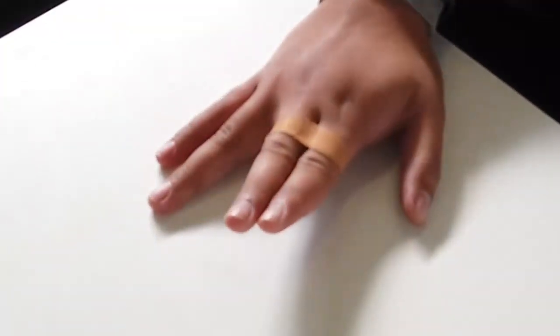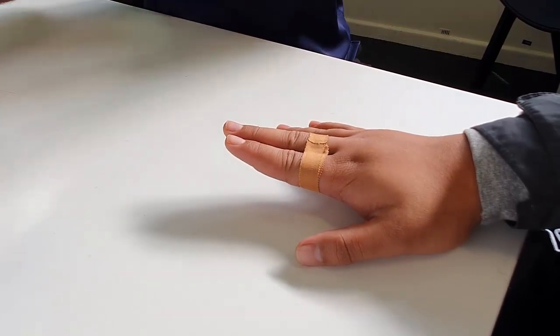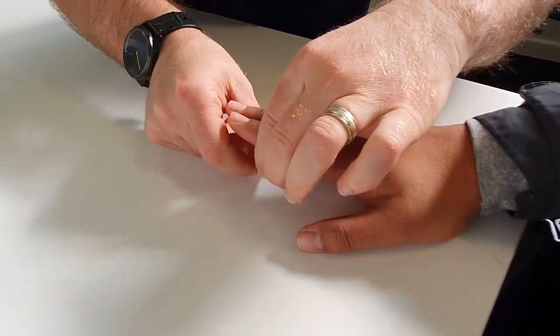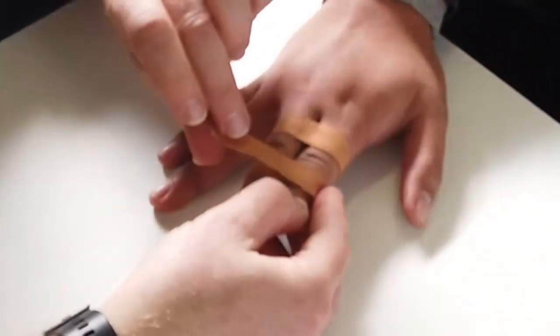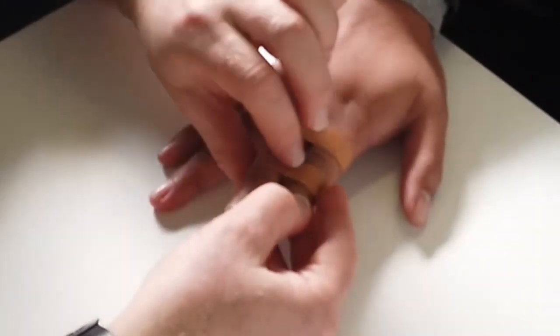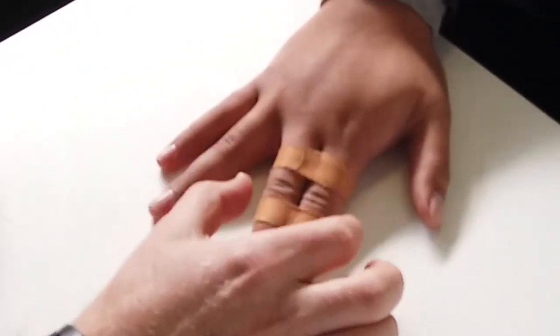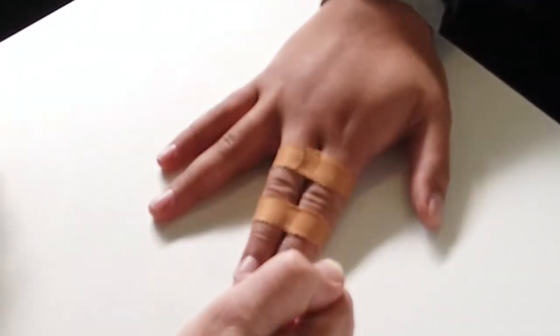Again, we want to do the same thing just above that joint. We can also place a little bit of padding in between the two fingers to make it more comfortable. In doing this, we're going to stop sideways movement of the fingers.